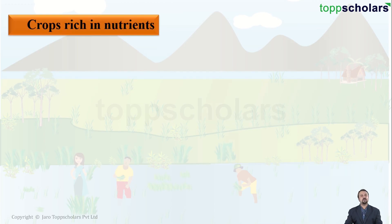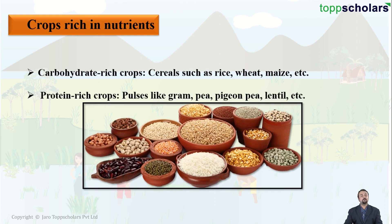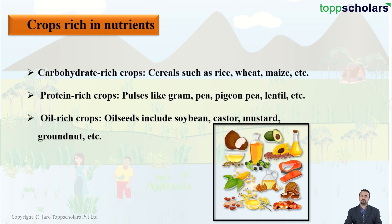Let us begin by looking at various crops and the nutrients they are rich in. First, crops rich in carbohydrates include cereals such as rice, wheat, maize, etc. Second, protein-rich crops include pulses like gram, pea, pigeon pea, lentil, etc. Third, oil-rich crops, which are also rich in fats, include oil seeds like soya bean, castor, mustard, and groundnut.